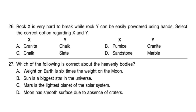Question 27. Which of the following is correct about the heavenly bodies? A: Weight on Earth is 6 times the weight on the moon — that is correct. B: Sun is the biggest star in the universe — no, it is the biggest star in the solar system. C: Mars is the lightest planet of the solar system — that's not true. D: Moon has smooth surfaces due to absence of craters — this is also incorrect. So Option A is the correct answer.